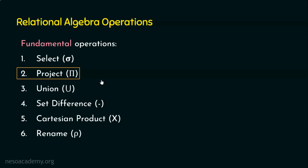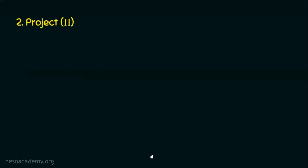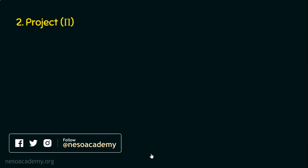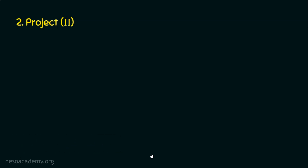Let's see the theoretical basics about the project fundamental operation. We need to understand the difference between select and project. Select selects all the tuples. Project, on the other hand, selects all the values but with certain attributes or columns left out. If you want all attributes, go for select; if you want selected attributes, then go for project.